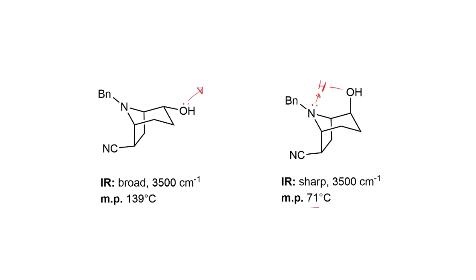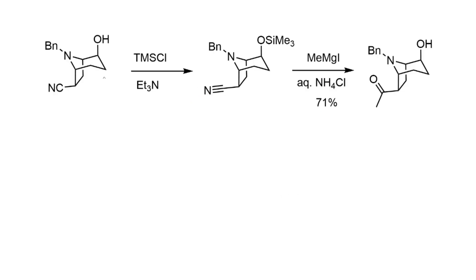The last thing to do is introduce the acetoxy group by derivatizing the nitrile introduced in the cycloaddition. First, the alcohol is protected with trimethylchlorosilane and triethylamine as the TMS ether — a very flimsy, transient protecting group that's easily removed. A more robust group like TBDMS could be used, but this protection only needs to survive one step.